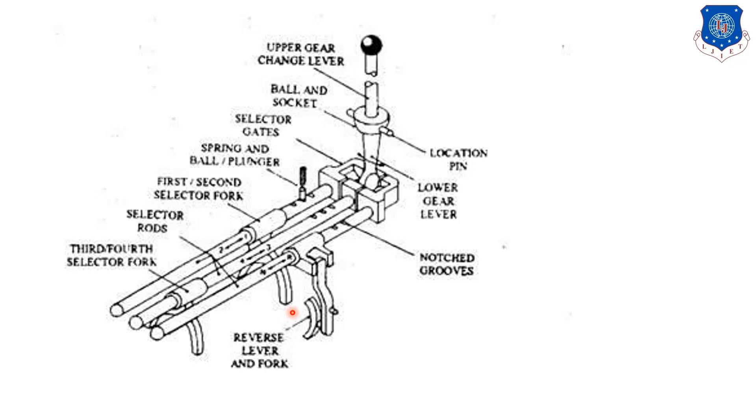Spring and ball plungers are provided with the first and second gear selector. This is the location field. This diagram represents the complete selector mechanism. Thank you so much.